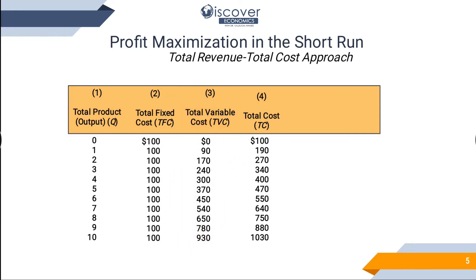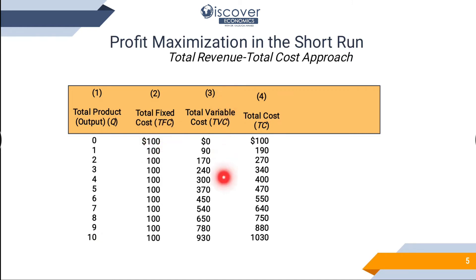In the exams, if a person can produce up to 10 products, his fixed cost is 100 and his variable costs are given. You have to draw this table with all the given information.